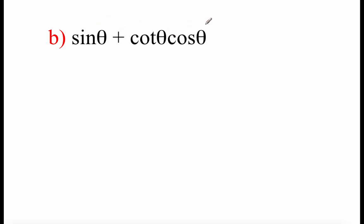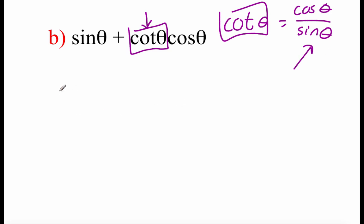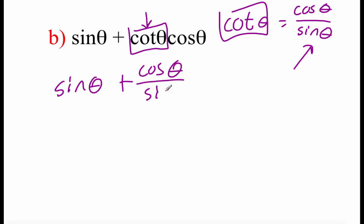In example B, we've got sine of theta plus cotangent of theta times cosine of theta, and again we're trying to simplify using our identities. On the last one we could do GCF factoring, but we don't have that here — we have a sine and a cosine, so we can't factor those out. So I'm focusing on the cotangent piece. There's a quotient identity that says cotangent of theta equals cosine of theta over sine of theta, so I replace the cotangent with cosine over sine.